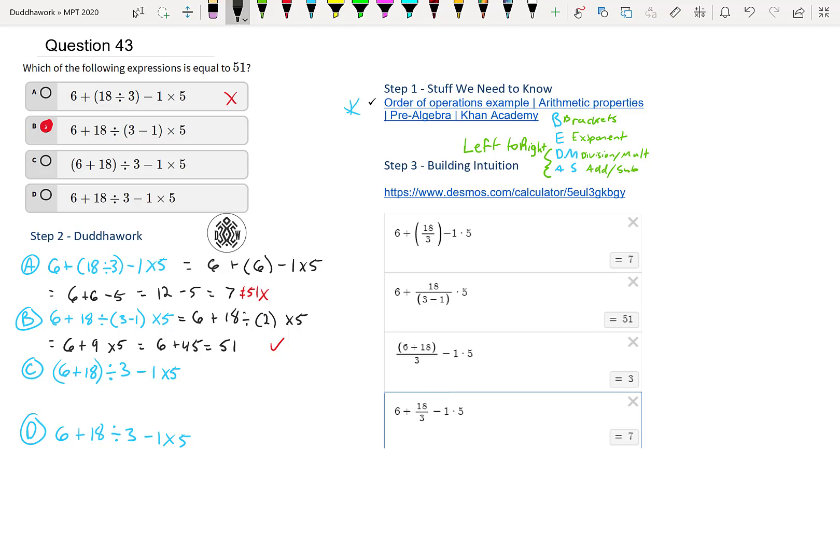And it's always a good idea to do C and D, even though you found the answer, because sometimes you make a mistake, you'll get two 51s, and then you realize I forgot the plus one here, or whatever it is.